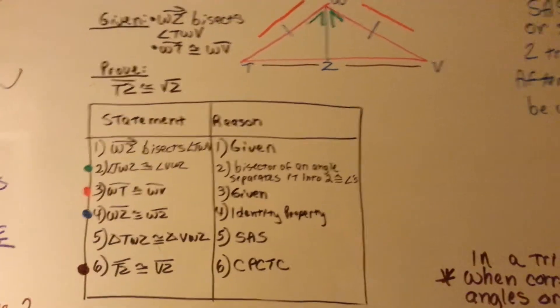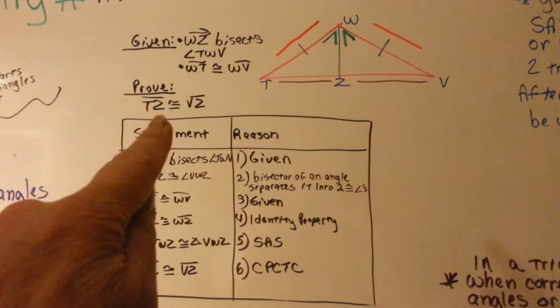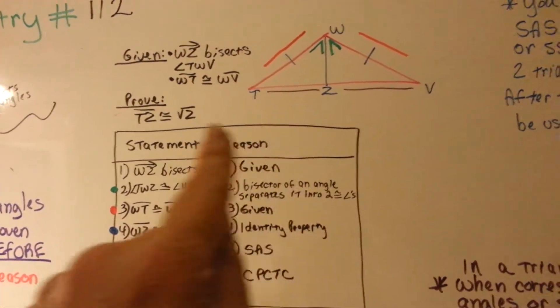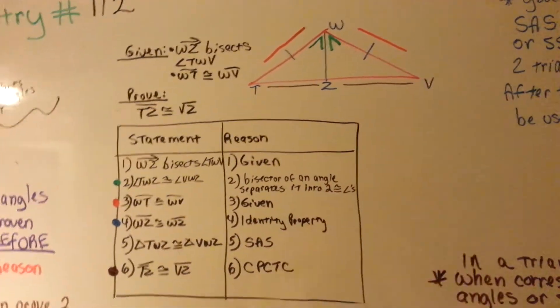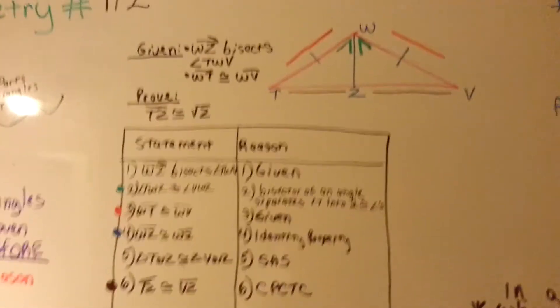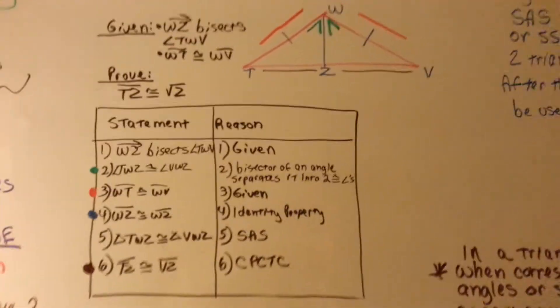So let's look at this. We need to prove that TZ, this guy, is congruent to ZV, this guy. Alright? So let's see if I can try to keep the picture in the frame.